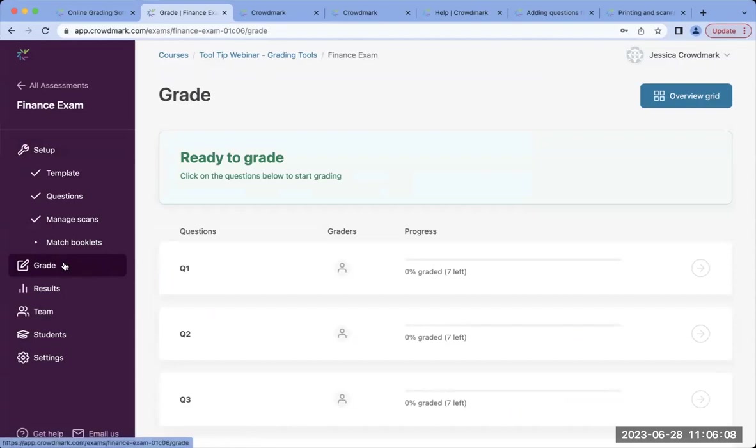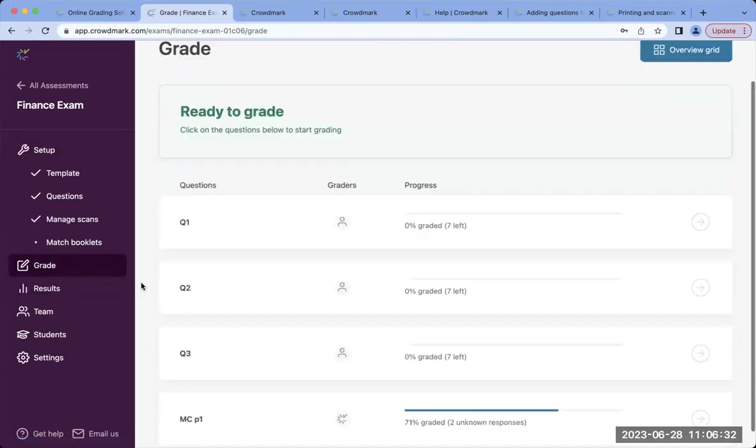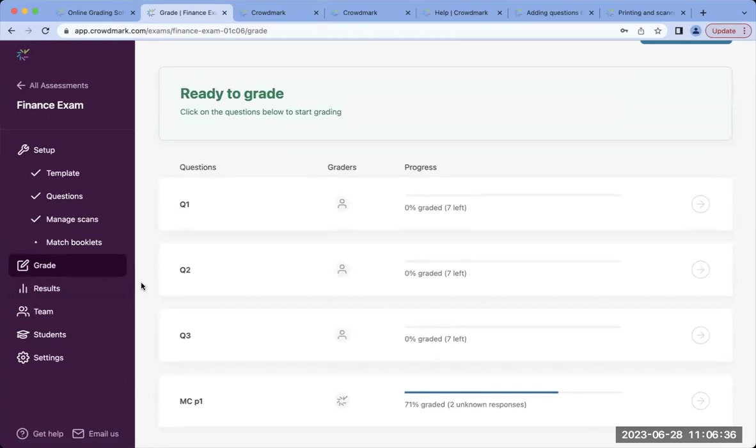Once you do click on grade in your assessment interface, you will be presented with this dashboard, and this will outline all of the different questions that are part of an assessment, as well as the progress that has already been made by the grading team and the different versions of questions that exist within that assessment. You'll be able to see who from your grading team has already started to grade the questions by hovering over this graders icon, and you'll also be able to see how quickly that grader has actually went through each question and the speed of grading.